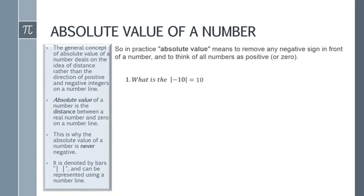For example, what is the absolute value of negative 10? The number inside the bars — think of it as a positive number. So the absolute value of negative 10 is equal to 10. Remove the negative sign in front. The number line illustration was just to show you that it represents a distance. In simplest form, just take the negative sign away and that's the absolute value. Find the absolute value of 5 — since there is no negative, the positive value of 5 is equal to 5.